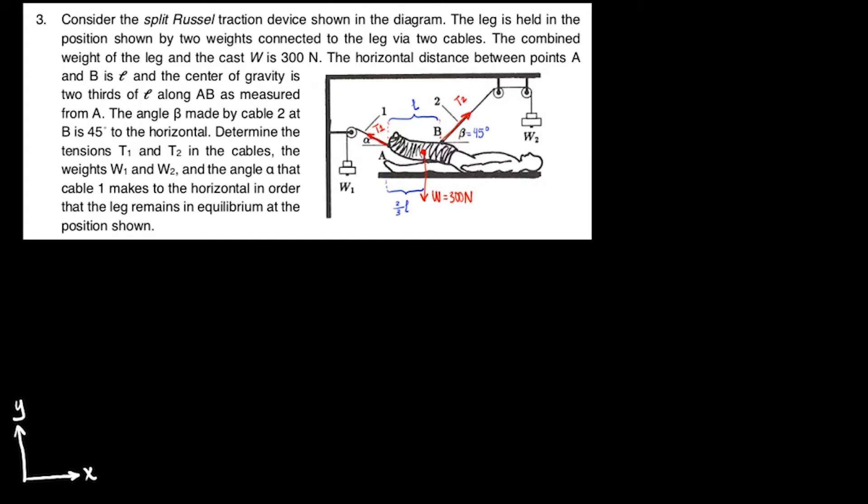We know beta is 45 degrees, and we want to find T1, T2, W1, W2, and alpha. I know this can seem like one of those problems in which we have to find a lot of things, but we were given just a couple of values. Well, this is quite literally one of those problems, but you have the tools now to solve it.